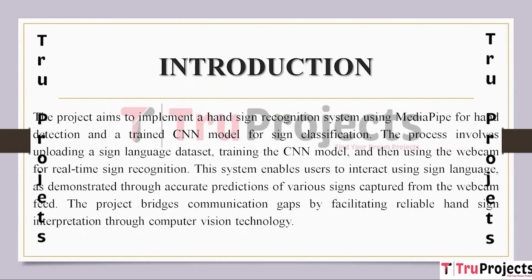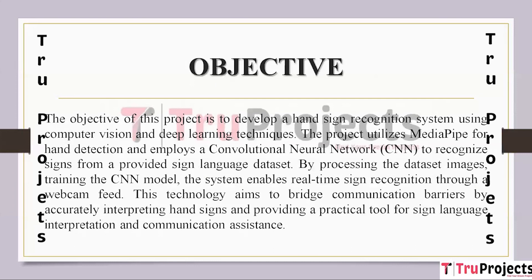The project uses computer vision technologies to enable accurate hand sign interpretation, bridging communication obstacles. The objective of this project is to create a hand sign recognition system utilizing deep learning and computer vision methods. The project makes use of MediaPipe to detect hands and a Convolutional Neural Network (CNN) to identify signals from a dataset of sign language. Real-time sign identification using a webcam feed is made possible by the system's analysis of dataset images and training of the CNN model, offering a useful tool for sign language interpretation and communication support.